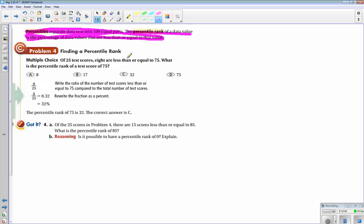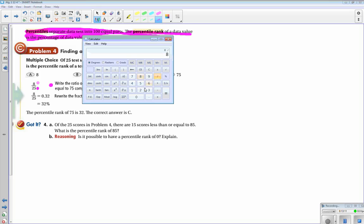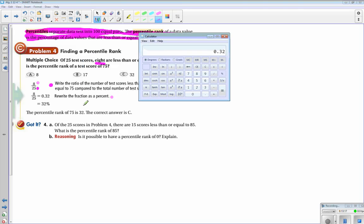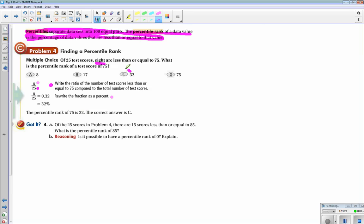So let's take a look at this problem. Of 25 test scores, 8 are less than or equal to 75. What is the percentile rank of a test score of 75? Step number one, write the ratio of the number of test scores less than or equal to 75 compared to the total number. So in this case, I have 8 out of a total of 25. Rewrite the fraction as a percent, so that's just a calculator chug: 8 divided by 25 is 0.32, and then write it as a percent, so 32%. The percentile rank of 75 is 32, so the correct answer would be C.